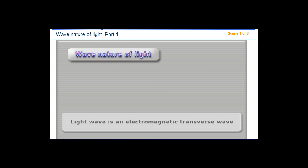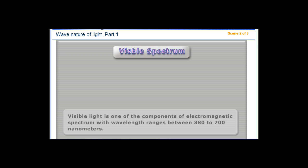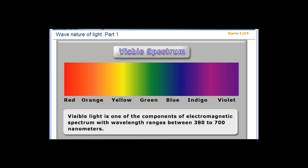Wave Nature of Light. Light wave is an electromagnetic transverse wave. Visible light is one of the components of electromagnetic spectrum with wavelength ranges between 380 to 700 nanometers.